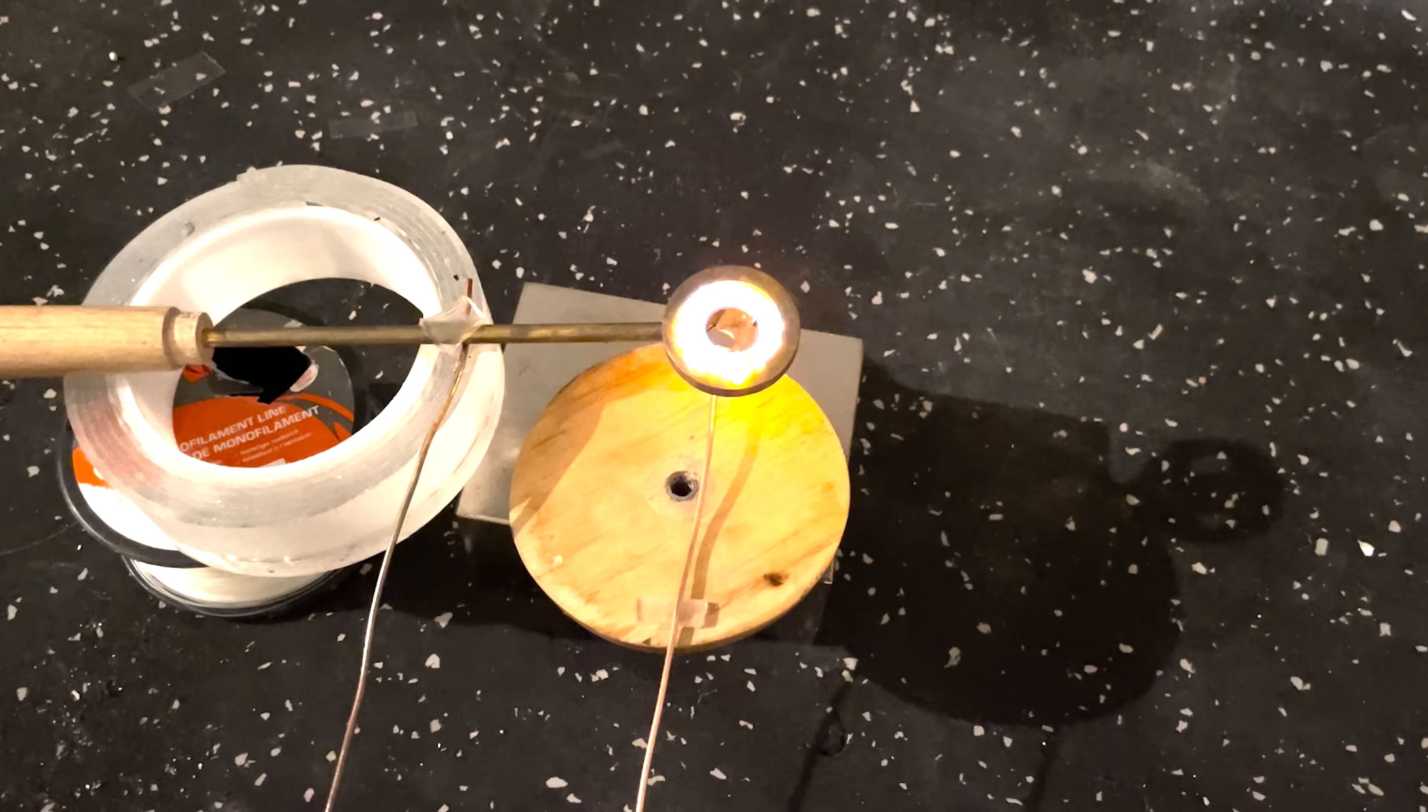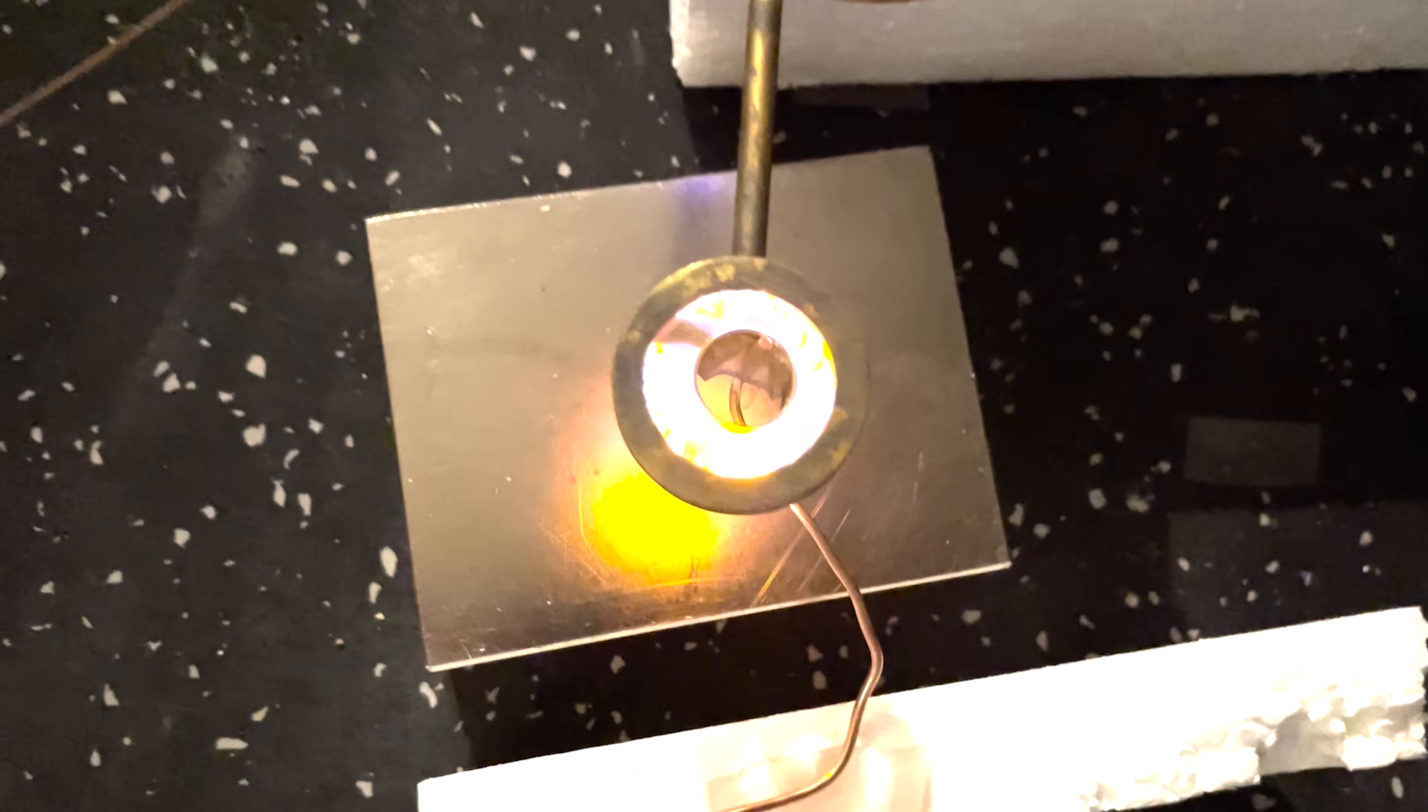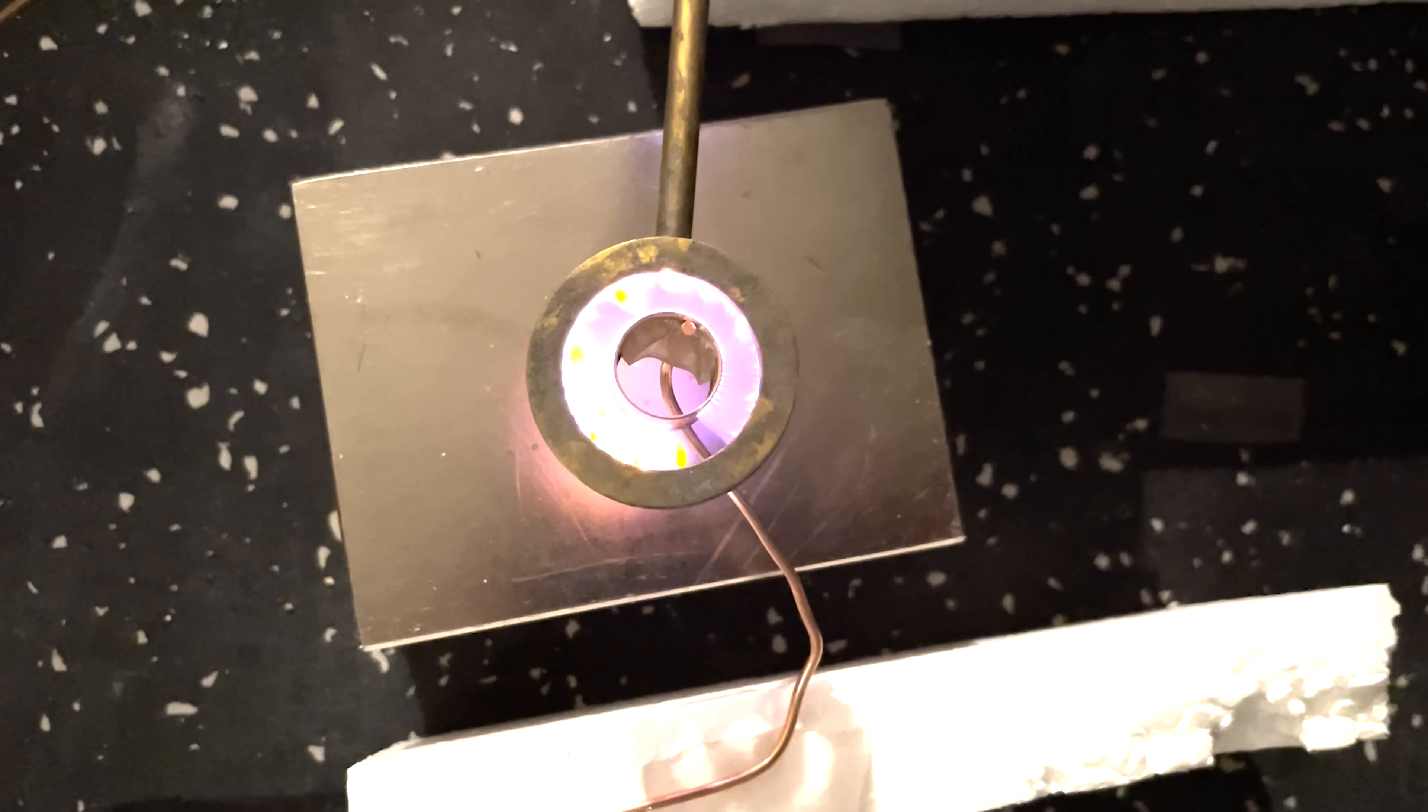This is what it looks like at regular speed. The arc is spinning around so fast that it just looks like a continuous plasma between the outer and the inner ring here.